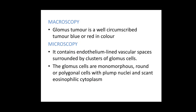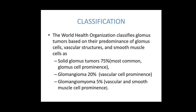Macroscopically, a glomus tumour is a well-circumscribed tumour which is blue or red in colour. On microscopy, it shows endothelial-lined vascular spaces surrounded by clusters of glomus cells. These glomus cells are monomorphous, round or polygonal cells with a plump nucleus and eosinophilic cytoplasm. WHO has classified glomus tumours based on the proportion of the glomus cells, vascular structures and smooth muscles within the tumour.